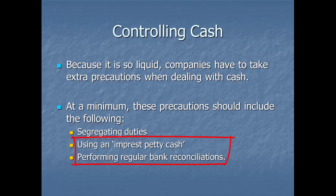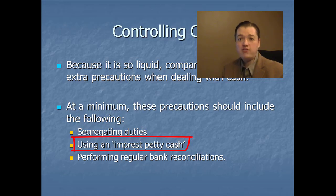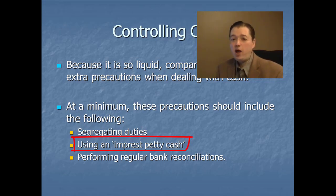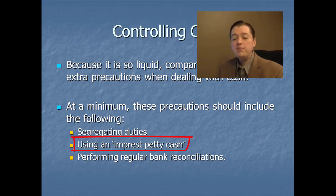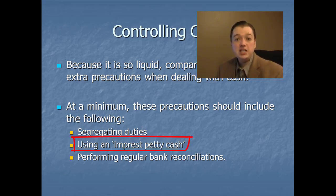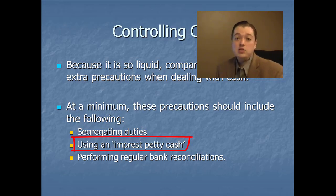Other ways to control cash — not as powerful as segregation of duties but still helpful — include the use of an imprest petty cash account. Petty cash means taking money out of the checking account and putting it in a central location so you can pay things without having to write a check and get multiple signatures. An imprest petty cash account works just like any other petty cash account except that the person who makes the payment has to keep the receipt, which is then debited to an expense when the account is replenished.